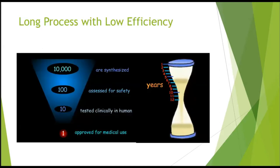Why is the process of drug discovery and development so expensive? Because of its low efficiency. From 10,000 tested compounds, around 100 show some activity and safety. Ten of them enter clinical trials and only one is approved for medical use. Recent studies show the initial number of tested compounds can even exceed a million. This process takes between 8 and 12 years, though with the anti-COVID vaccines we have seen that development time can be significantly reduced.